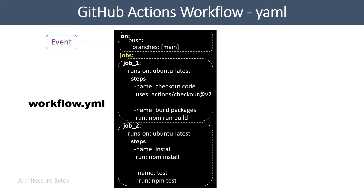The jobs section has one or more jobs, and every job has one or more steps. The 'runs-on' part defines the platform on which this job must run — in this case, Ubuntu latest. Then it defines two steps: first, checkout code, and second, build packages. Steps are always executed in a sequence.